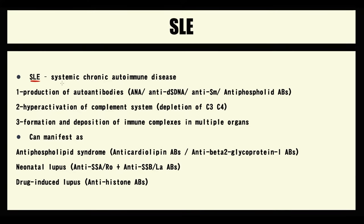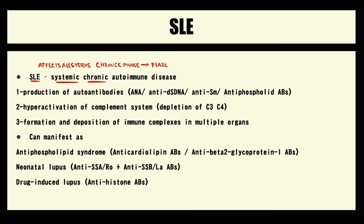Systemic lupus erythematosus is a systemic chronic autoimmune disorder. Systemic means that lupus affects practically all systems in our body. Chronic means that most of the time lupus remains in the chronic phase; from time to time, acute flares occur when symptoms become more severe, but then the acute flare resolves and the disease again enters into the chronic phase. Acute flares we also call relapses.